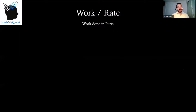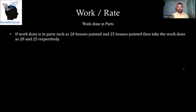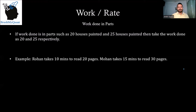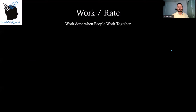When work done is in parts or quantities — such as 20 houses painted or 25 houses painted — then the work done can be taken as 20 and 25 respectively. For example, Rohan takes 10 minutes to read 20 pages and Mohan takes 15 minutes to read 30 pages, so their work done values are 20 and 30 pages respectively.